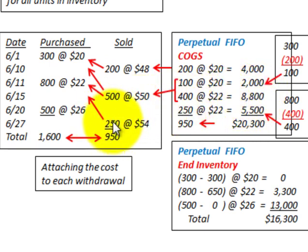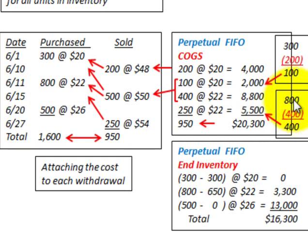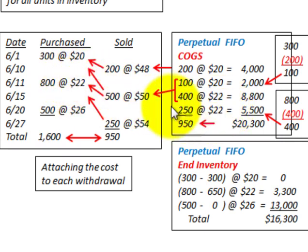Now we account for the next 250 units sold. We still have some remaining in the 800-unit quantity. We had 800 units, used 400, leaving 400 remaining. We're only selling 250 of those 400. So 250 comes out of the next oldest quantity of 800 at $22 per unit — 250 times $22 gives us $5,500. Having accounted for all 950 units sold, the total cost of goods sold is $20,300.